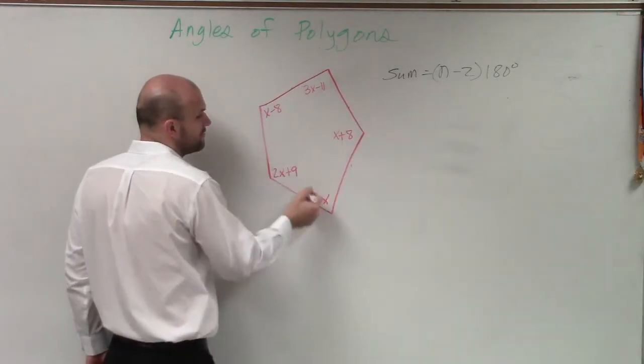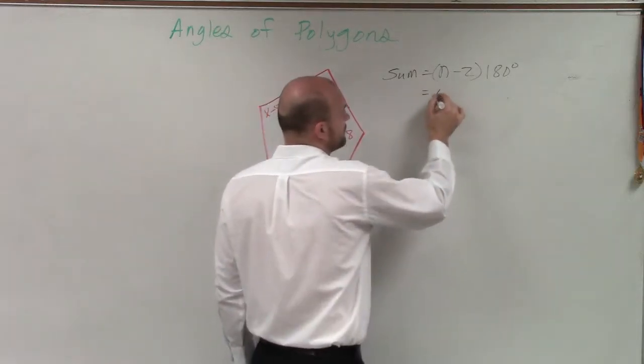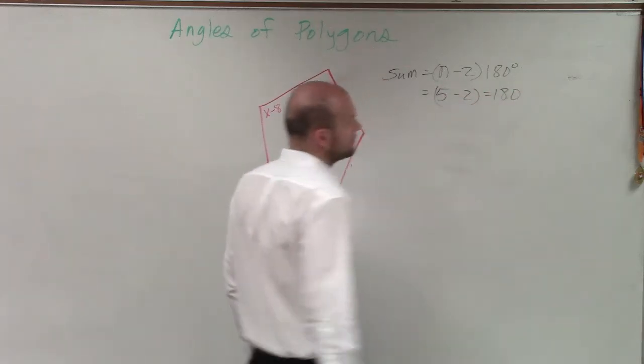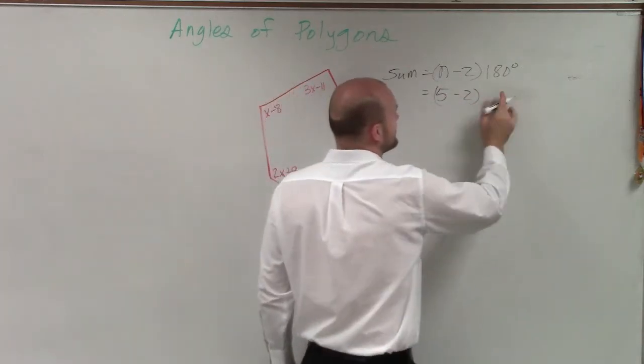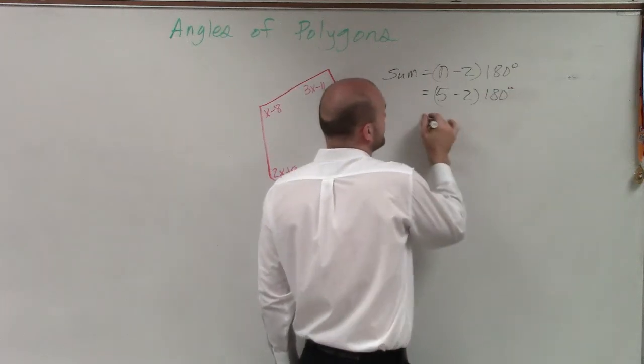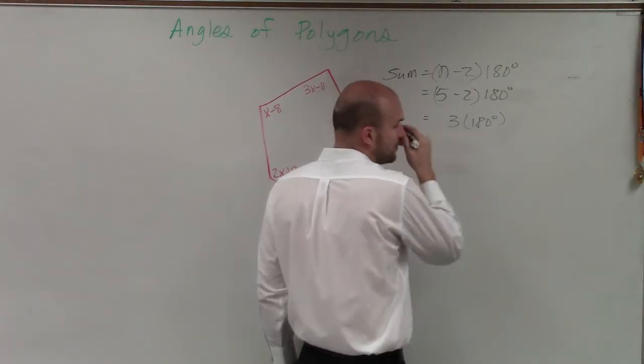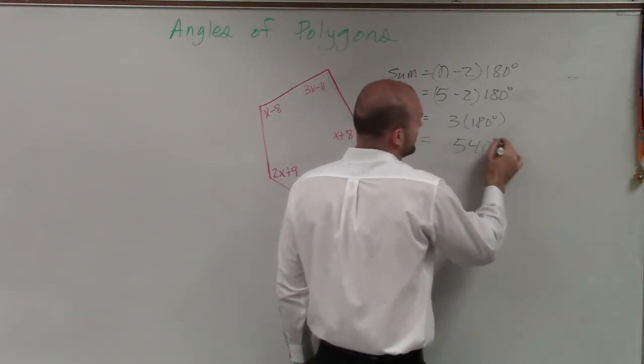1, 2, 3, 4, 5. All right, so 5 minus 2 equals 180. I'm sorry, 5 minus 2 times 180. Therefore, 3 times 180 degrees, which equals 540 degrees.